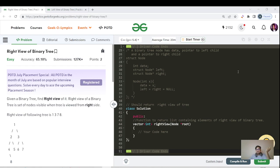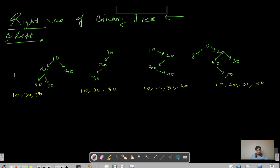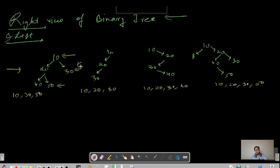Our task is to find the right view of a binary tree. Let us understand what that means with an example. Given the tree with nodes 10, 20, 30, 40, and 50, the right view means your eye is placed on the right side. So 10 will be visible and 30 will be visible. Node 20 is hidden exactly behind 30, so it's not in the answer. Node 50 is visible, and 40 is hidden behind 50. So the answer is 10, 30, 50.